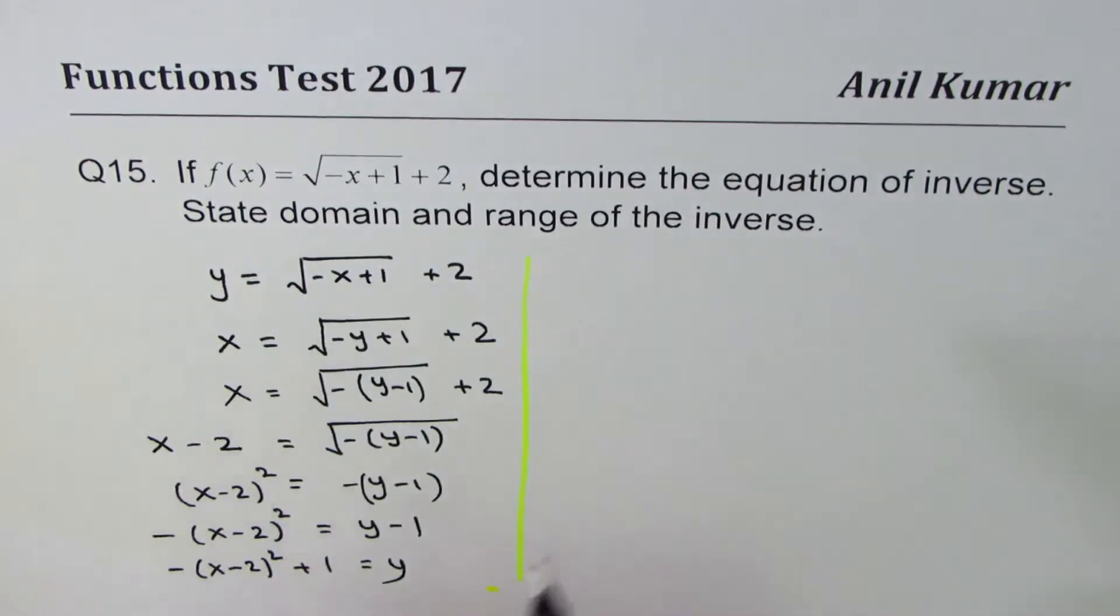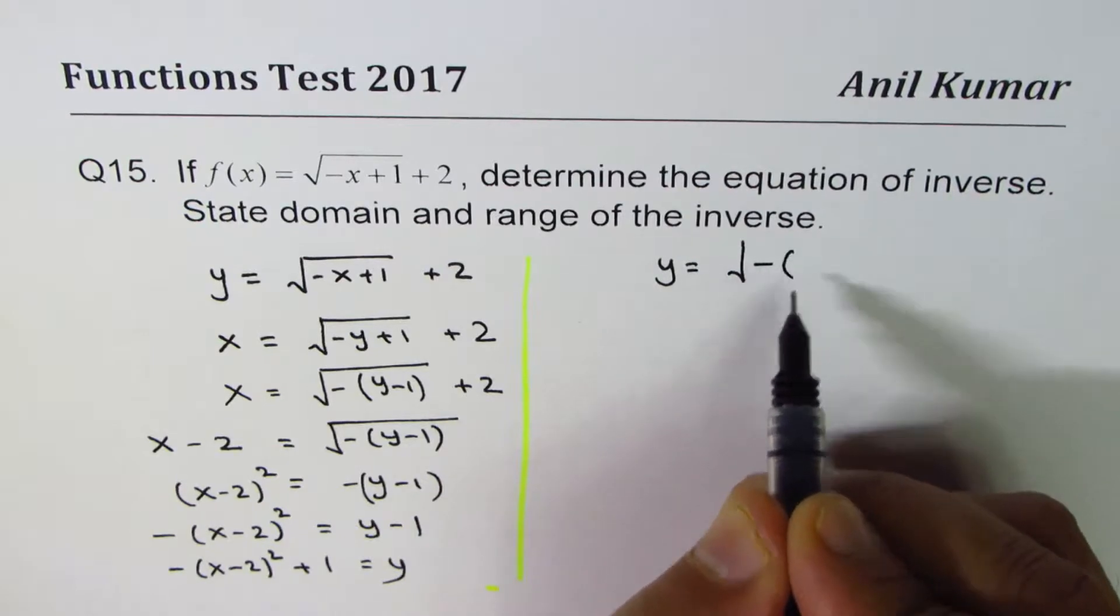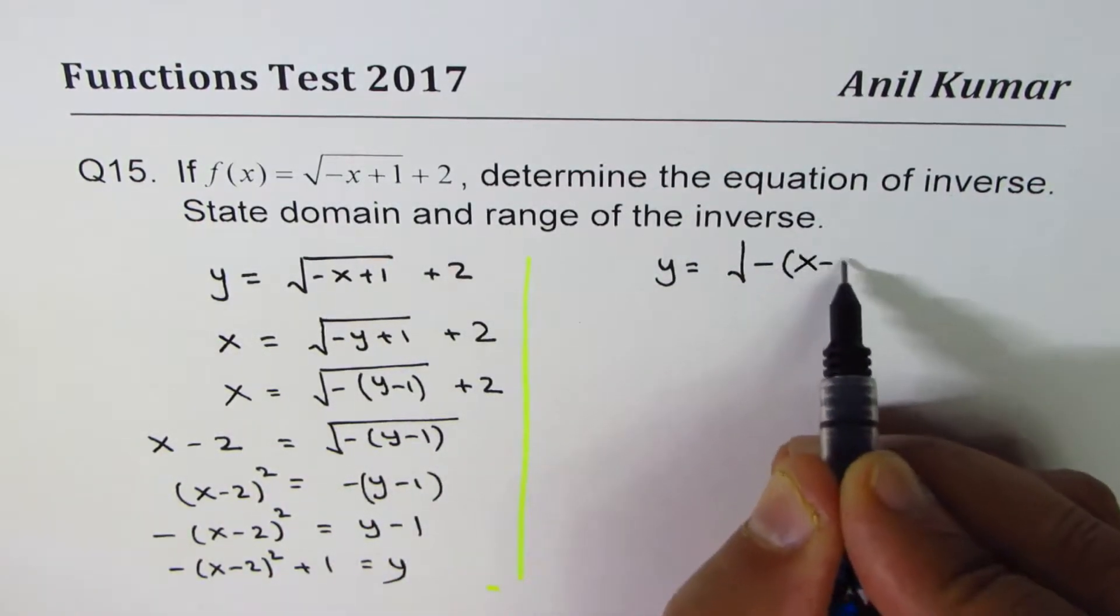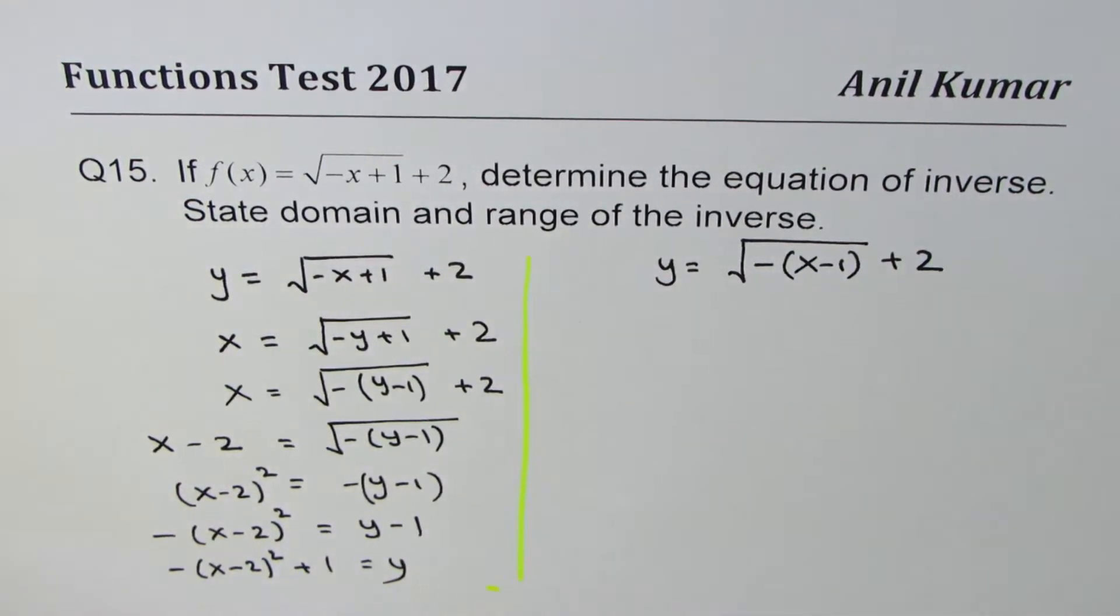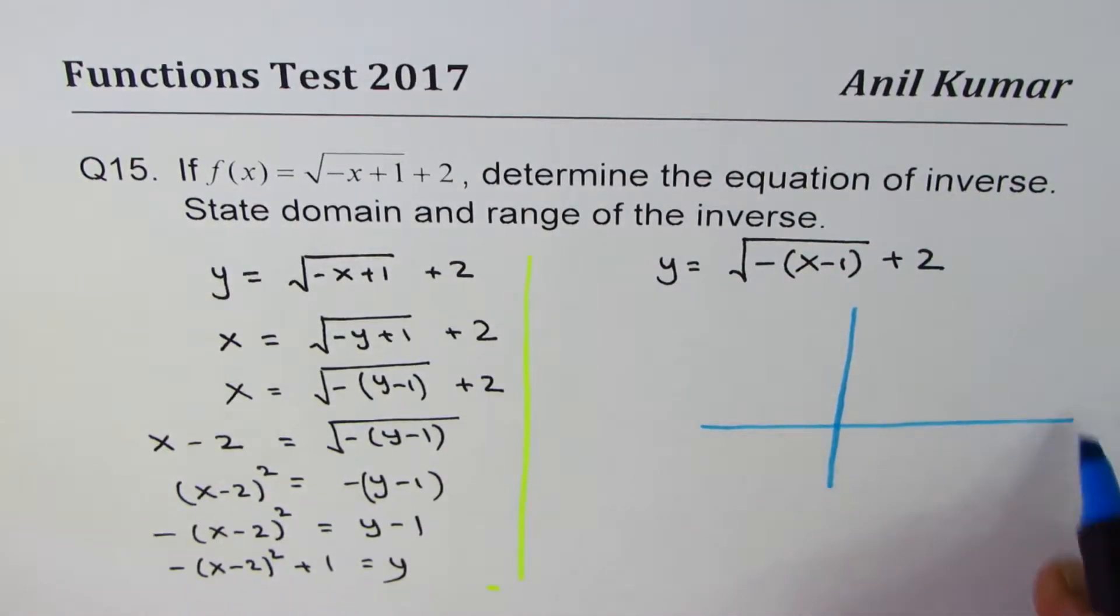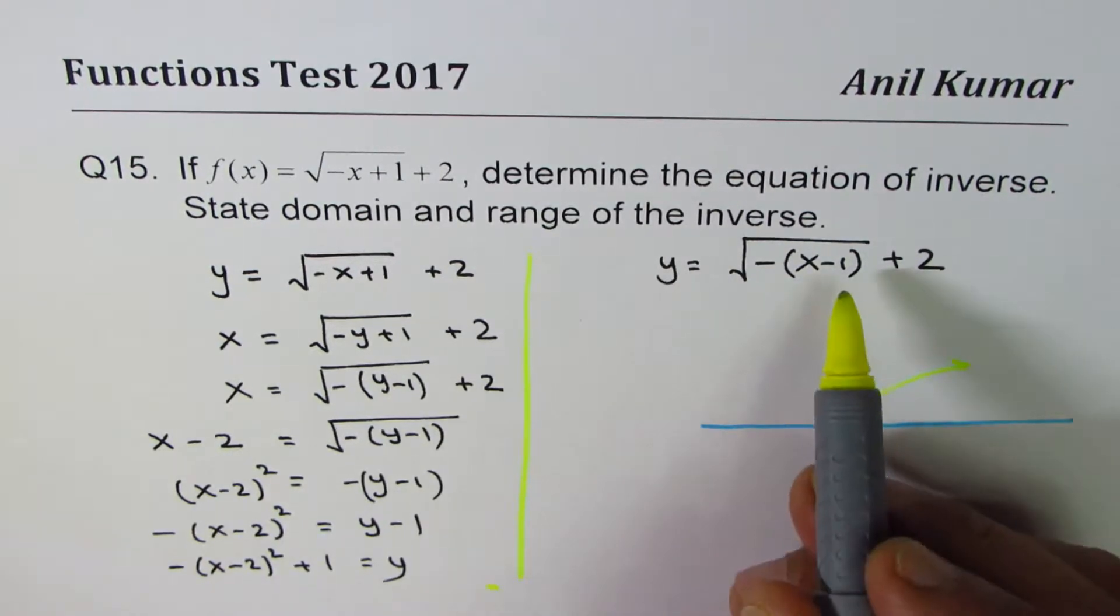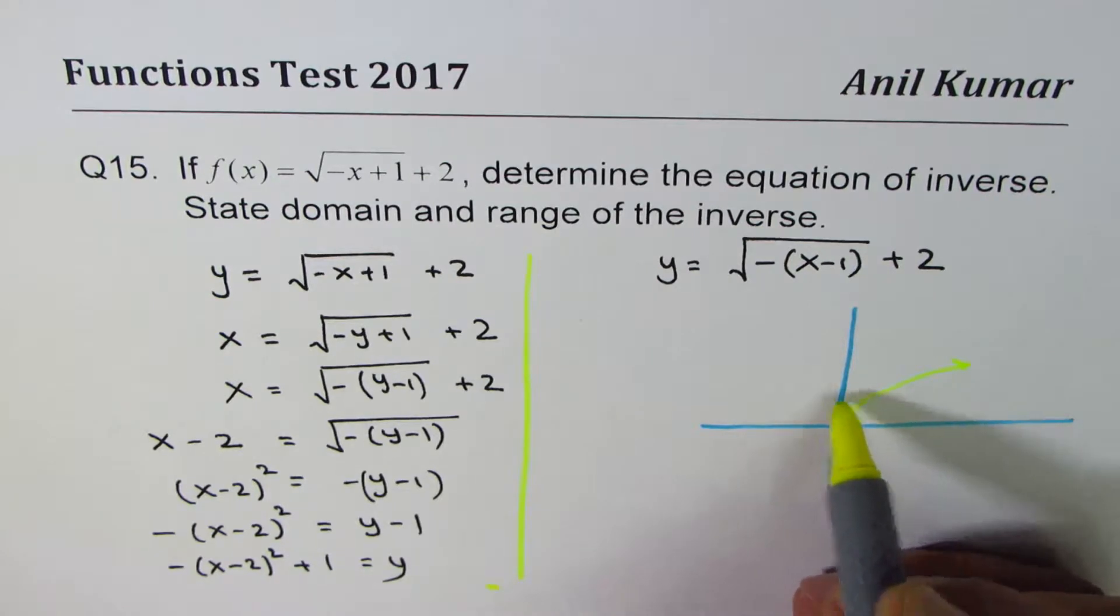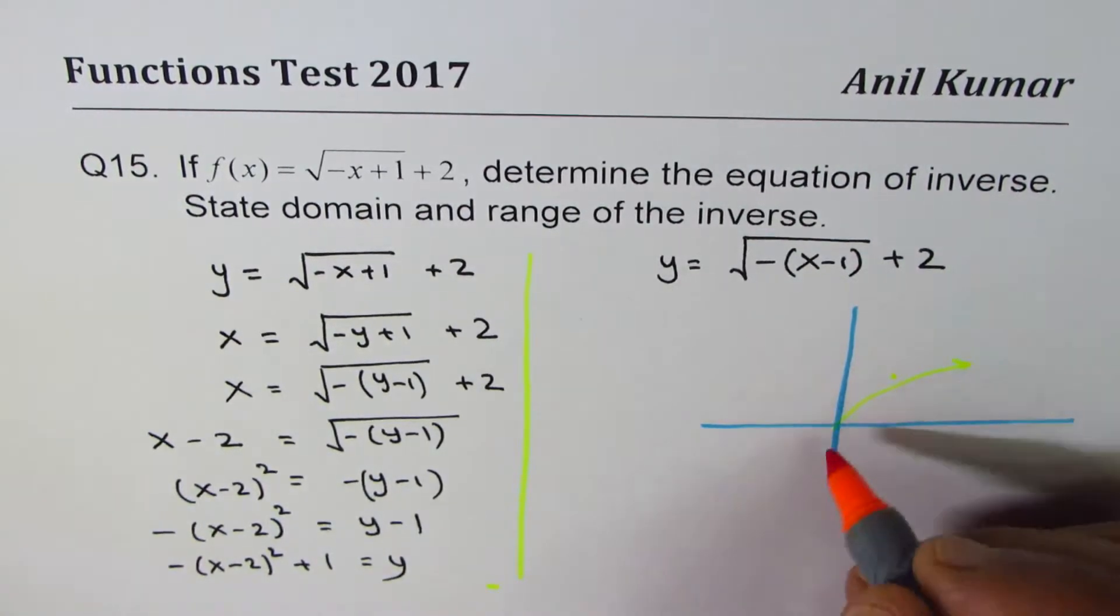So we'll go back to this function, which is y equals, that is f of x, let me write this as square root of minus x minus 1 plus 2. So let us sketch this function to understand better what we're trying to do. So that really means that the square root function has been reflected and moved one unit to the right. So we can see that the function is, let me sketch in a different color. That is the square root function. So after translation, this is your y, or f of x.